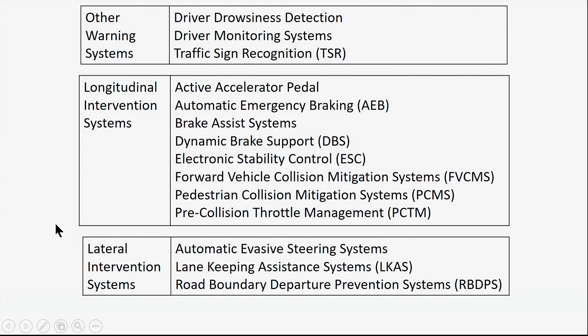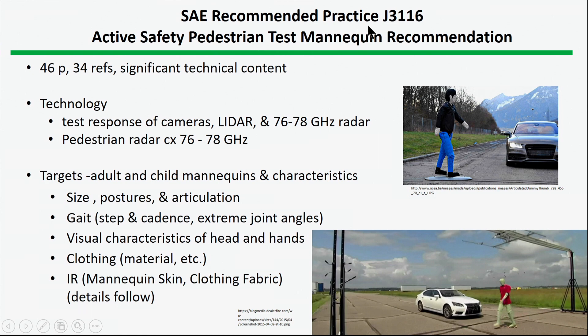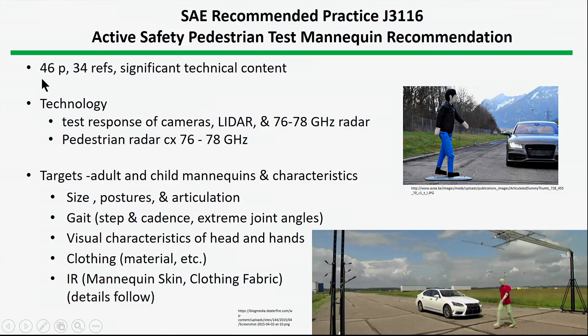Here are some other systems identified in that particular document. SAE J3116 has to do with testing pedestrian mannequins. There's a huge interest in both automated vehicles and manually driven vehicles providing systems that will automatically respond to pedestrians and not strike them. In the United States, more than just a few percent of those killed in motor vehicle crashes are pedestrians. So building systems to avoid crashes with them is rather important. This is a fairly substantial document — 46 pages — with significant technical detail that is very useful for doing tests involving pedestrian mannequins.